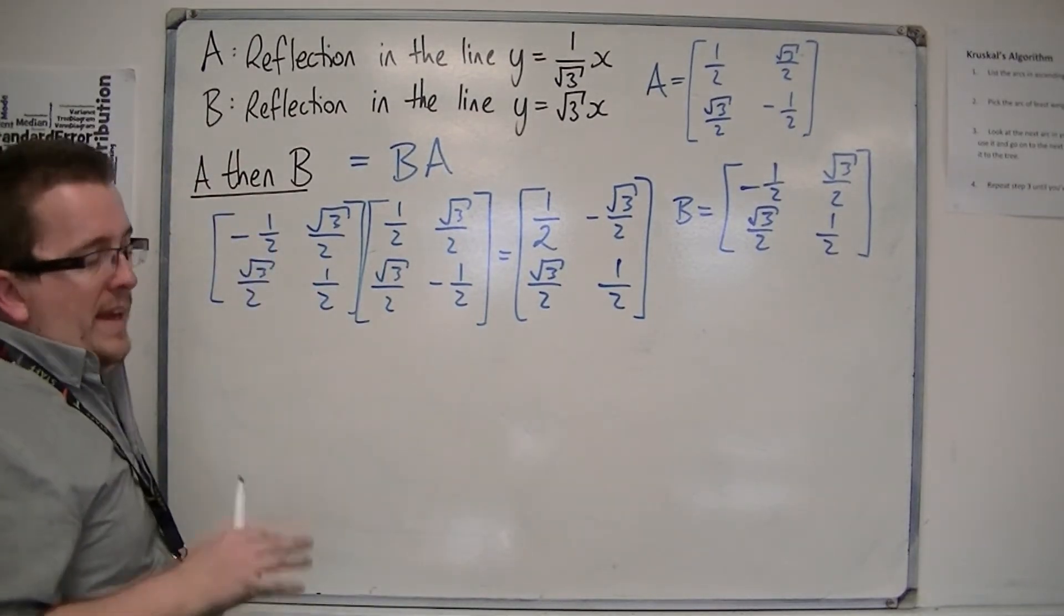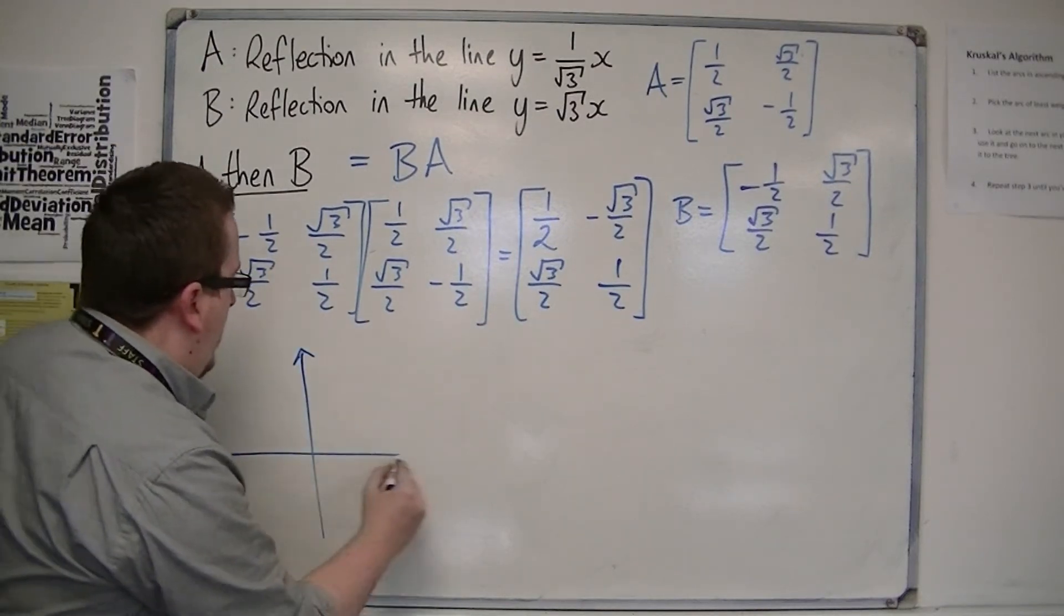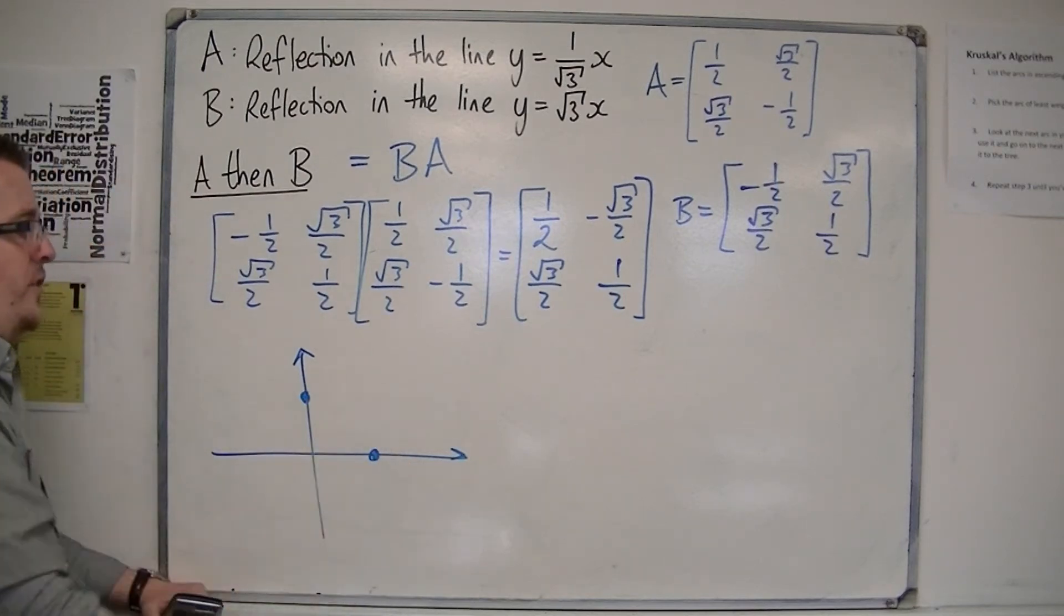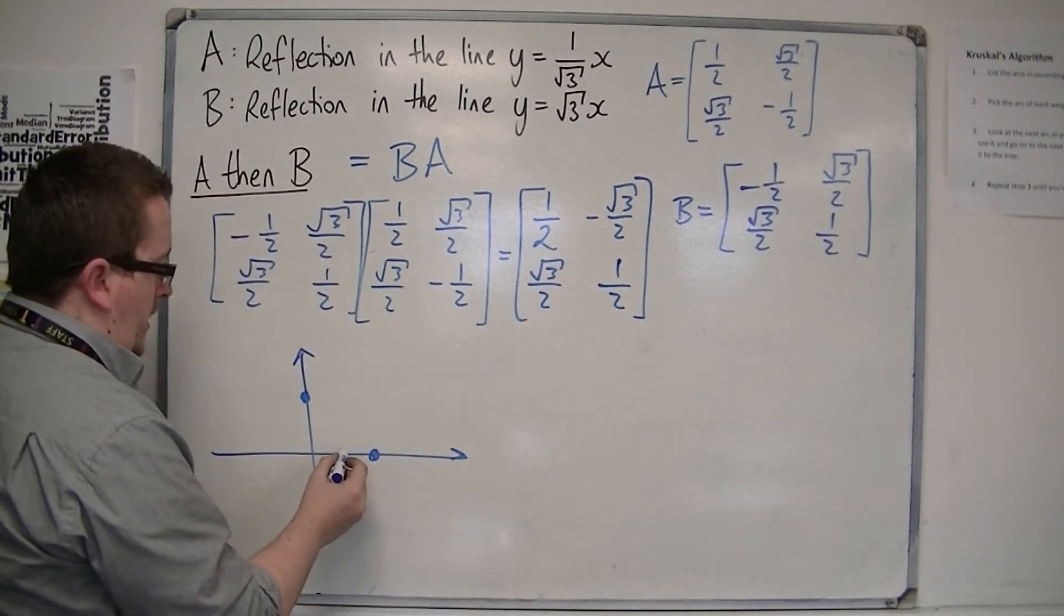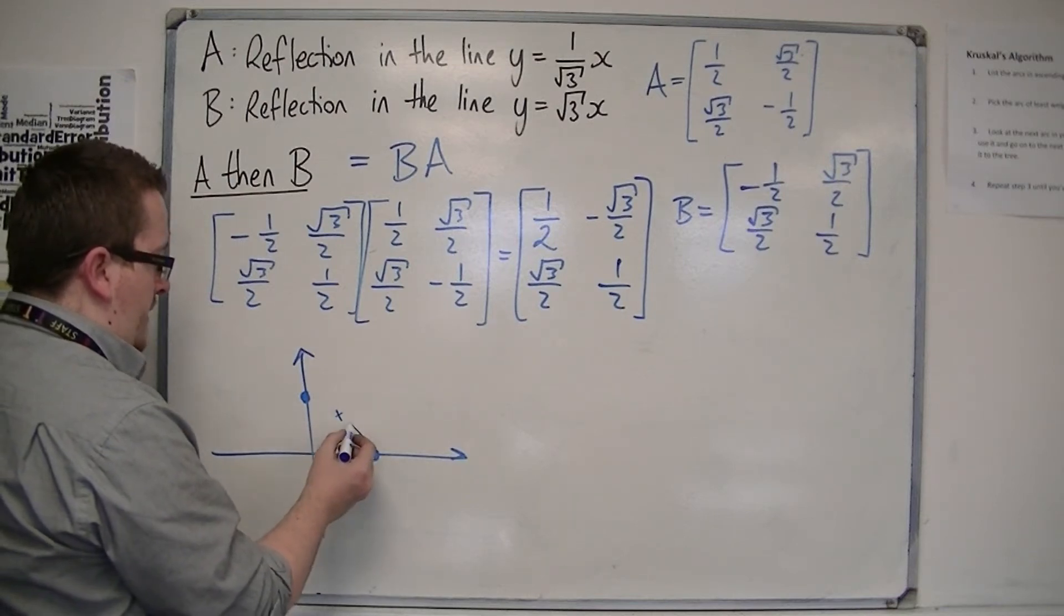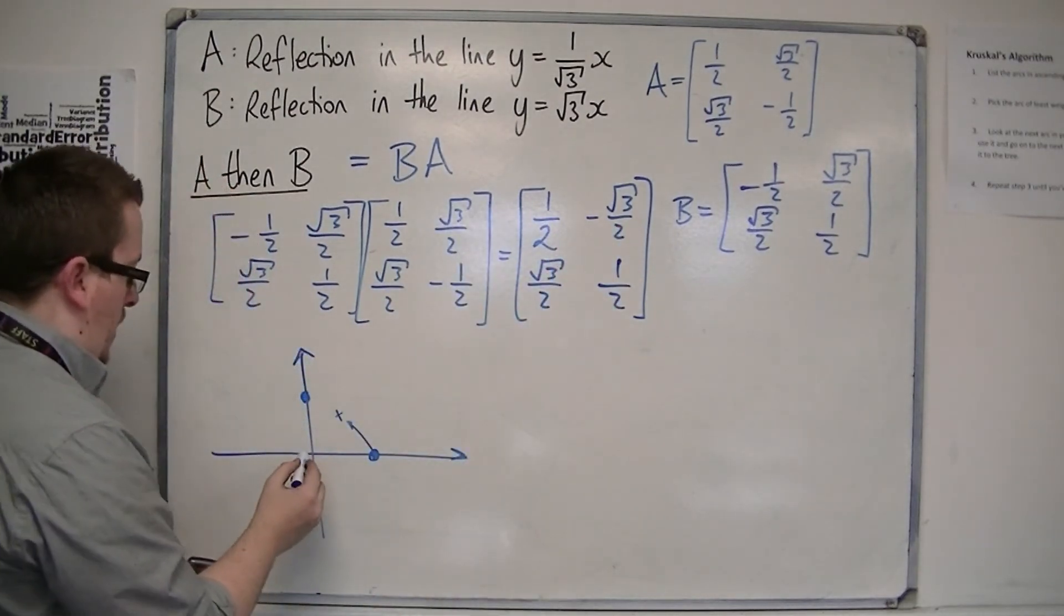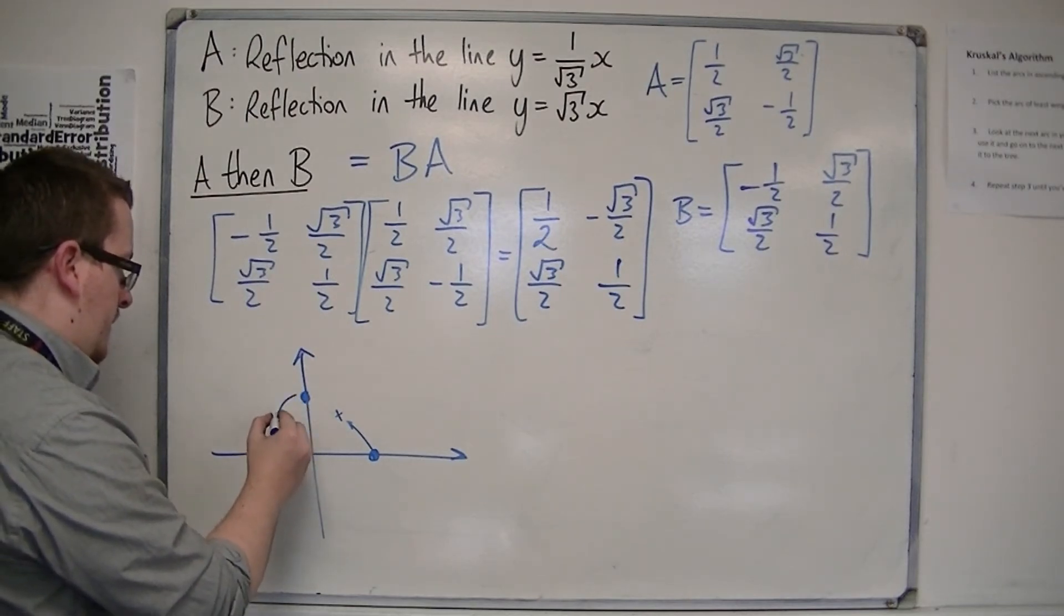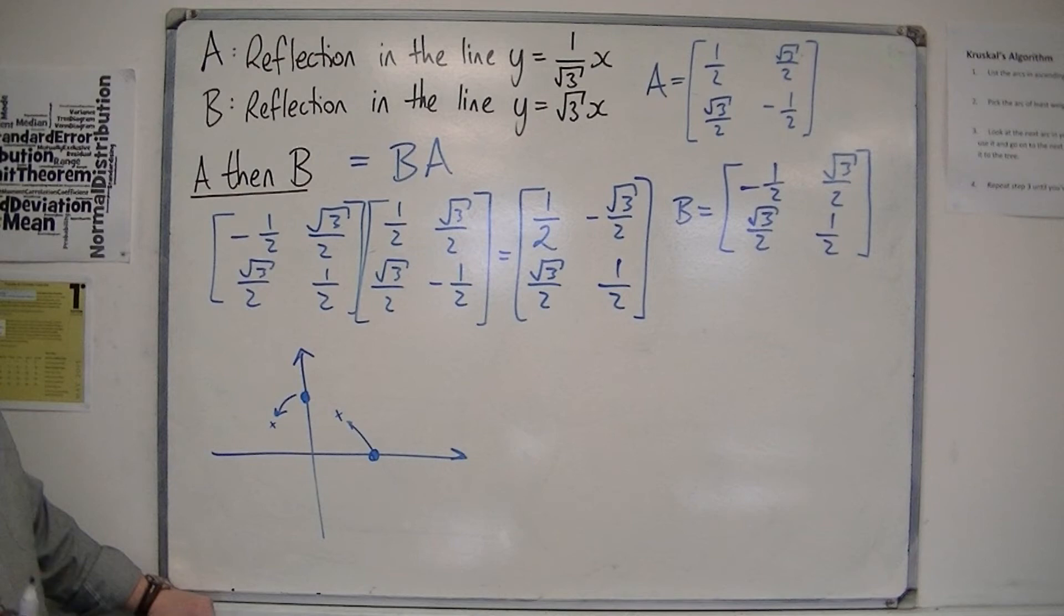If you're completely at a loss as to what type of transformation this is, a good way of doing it is to refer back to our old friends, 1, 0 and 0, 1. Now, 1, 0 has been moved to 1 half root 3 over 2. So, 1 half root 3 over 2 is there. That's moved there. And then, 0, 1 has moved to minus root 3 over 2, 1 half. So, minus root 3 over 2, 1 half. That's around here. You can see that because they're both going in one direction, this must be a rotation.